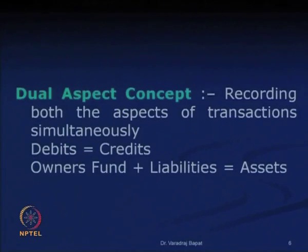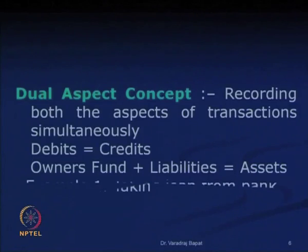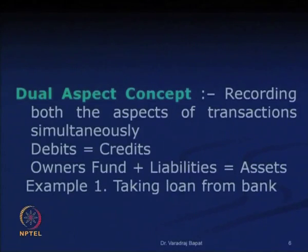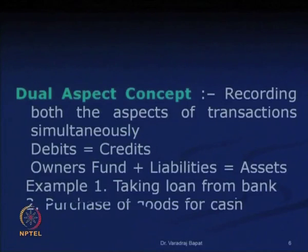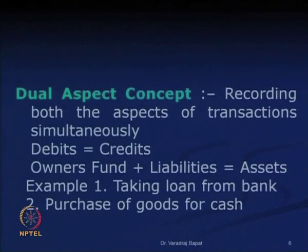We have also seen the balance sheet equation, wherein owner's fund plus liabilities equals assets. For example, when we take a loan from a bank, our bank account balance increases and our liability for the loan also increases. So on one hand an asset increases, and on the other hand a liability increases.